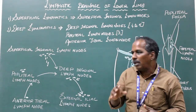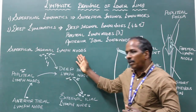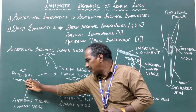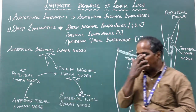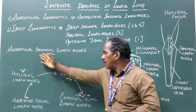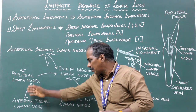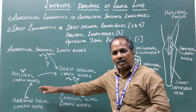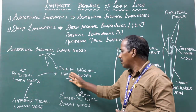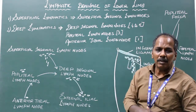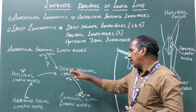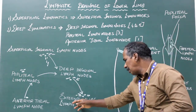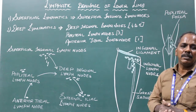The lymphatics of the lower limb are drained by the superficial inguinal lymph nodes, deep inguinal lymph nodes, and anterior tibial lymph nodes. They either directly or indirectly drain into the deep inguinal lymph nodes. From the deep inguinal lymph nodes, the efferent channels finally drain into the external iliac lymph nodes.